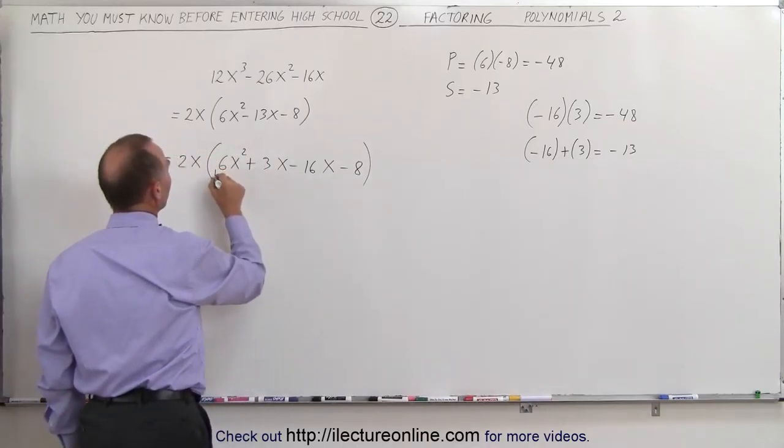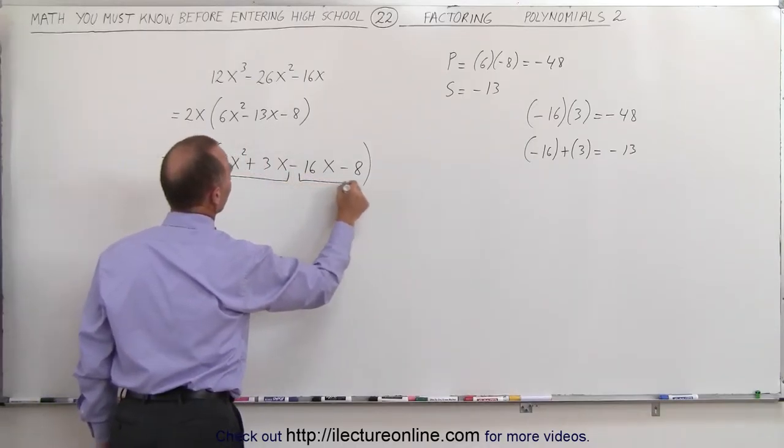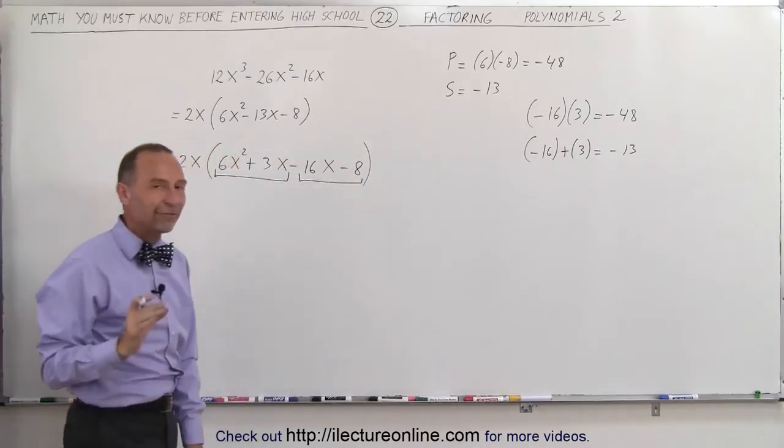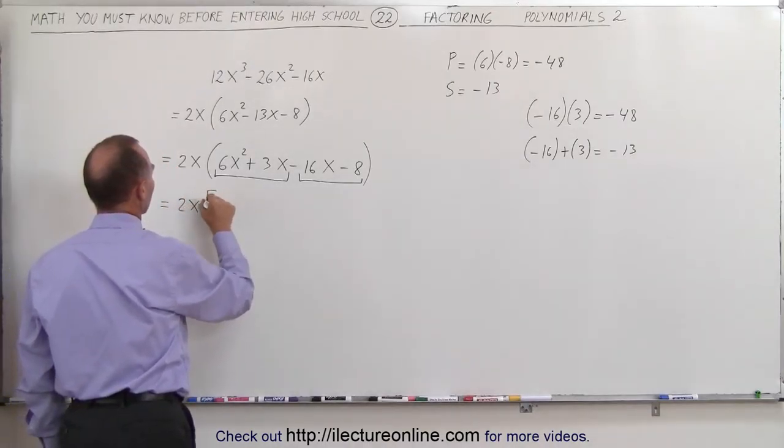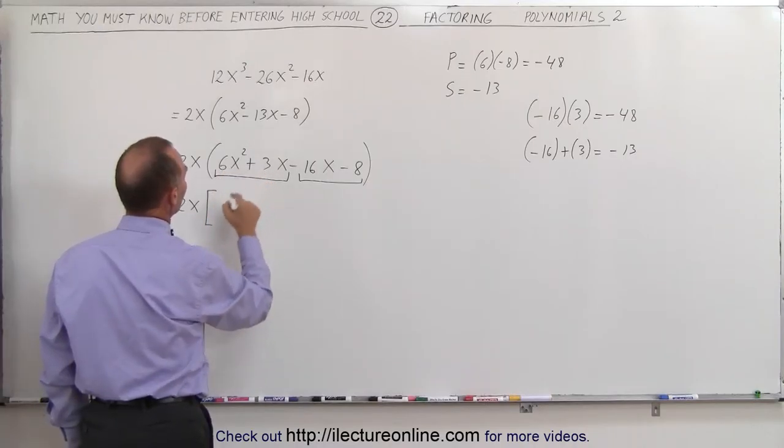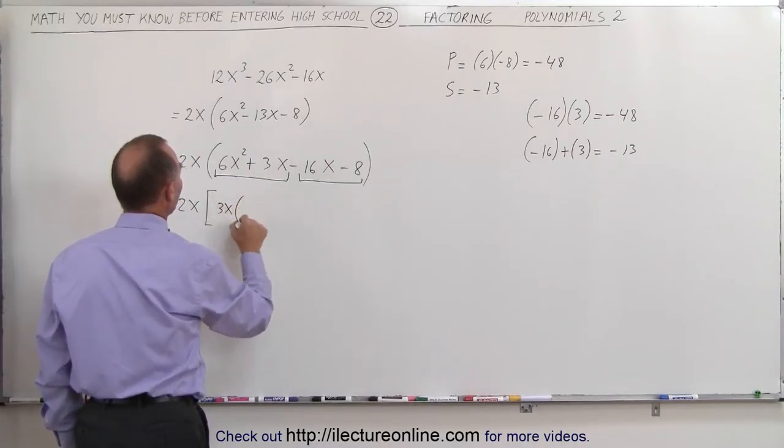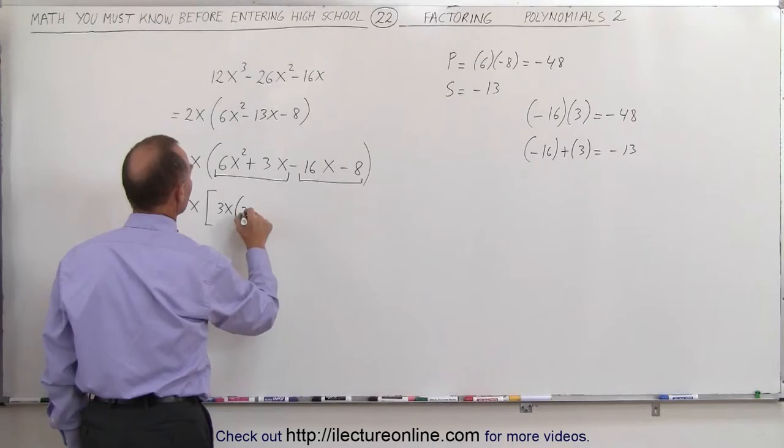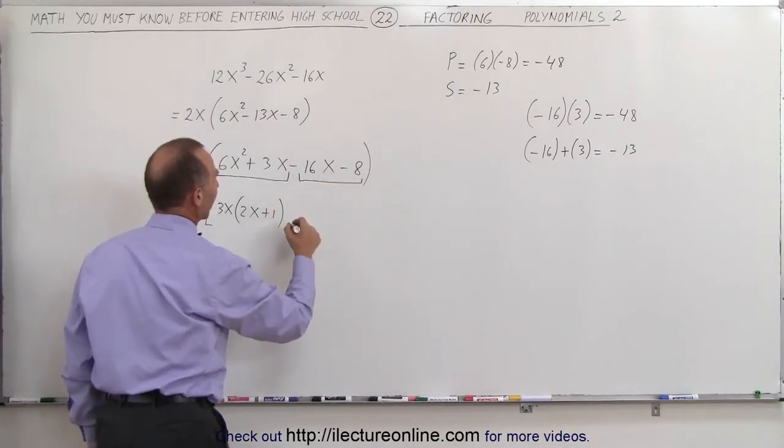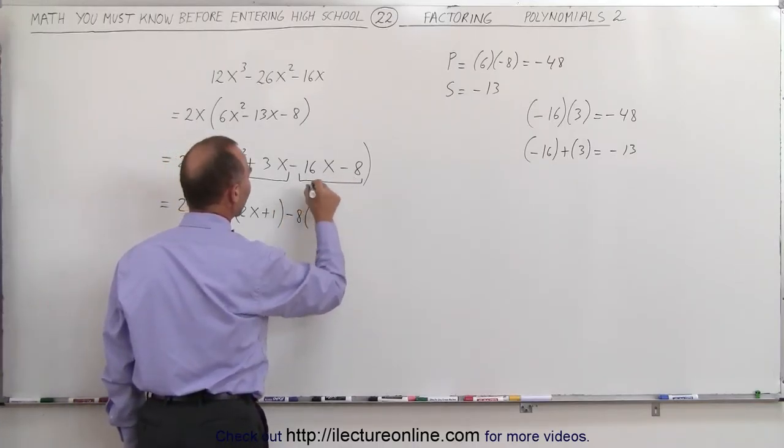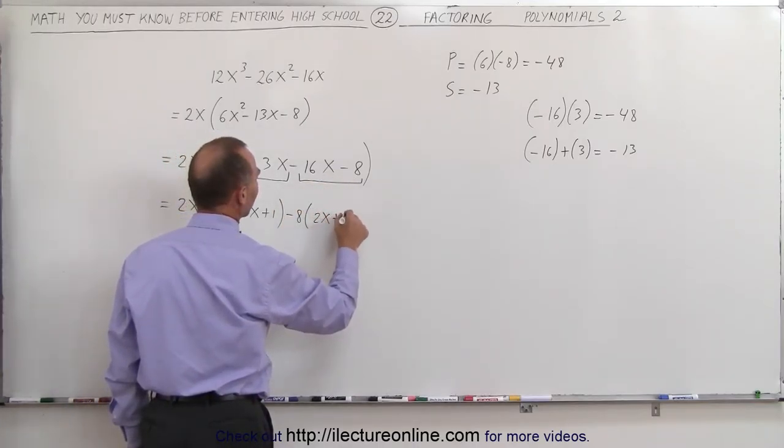Now I'm going to group these in groups of two. In each group of two, I can factor out something that's common. In the first group, notice what's common is 3x. When I factor out 3x, I'm left with 2x plus 1. And here I can factor out minus 8, and I'm left with 2x plus 1.